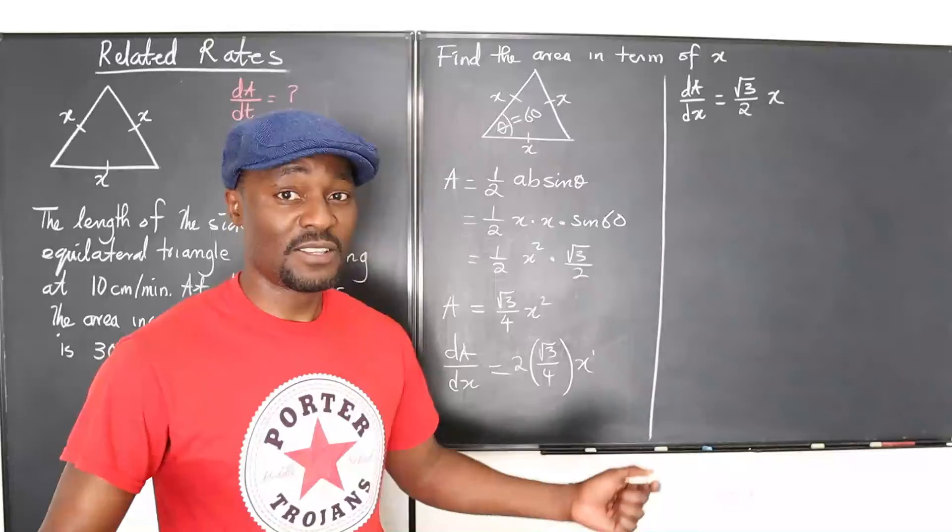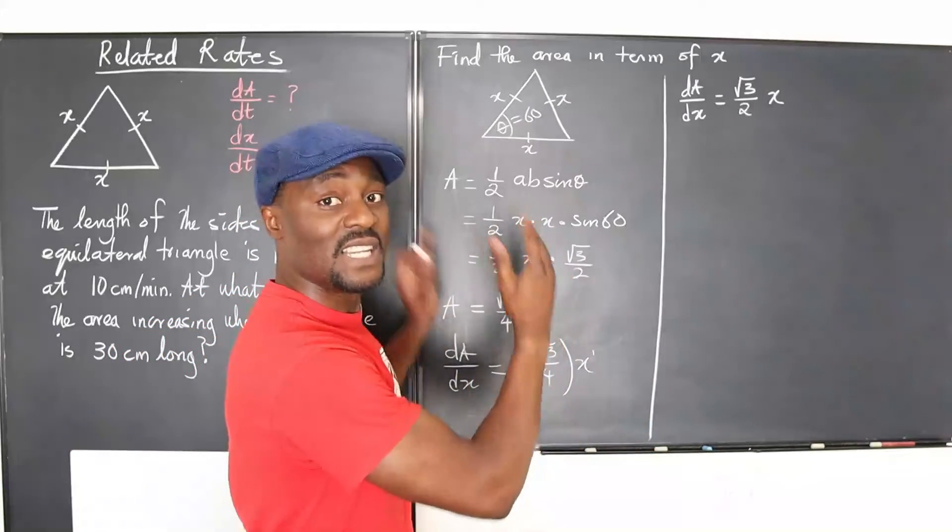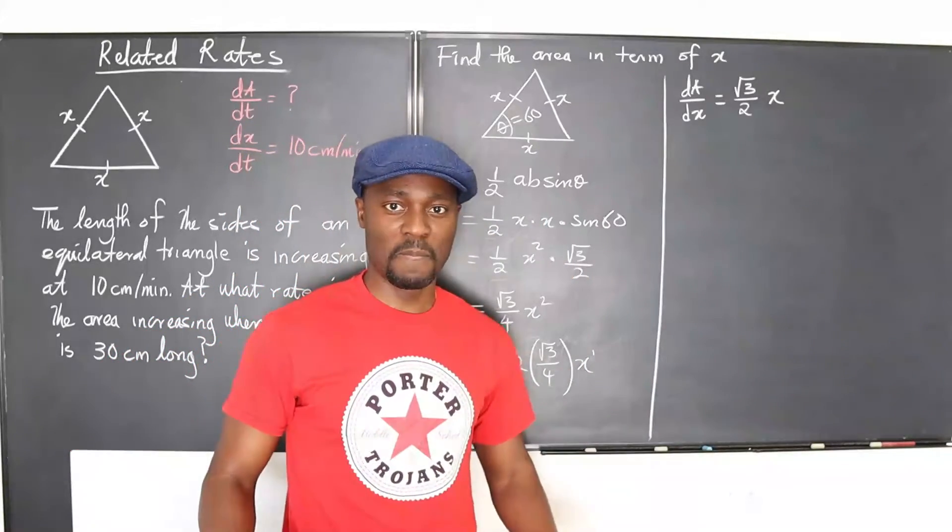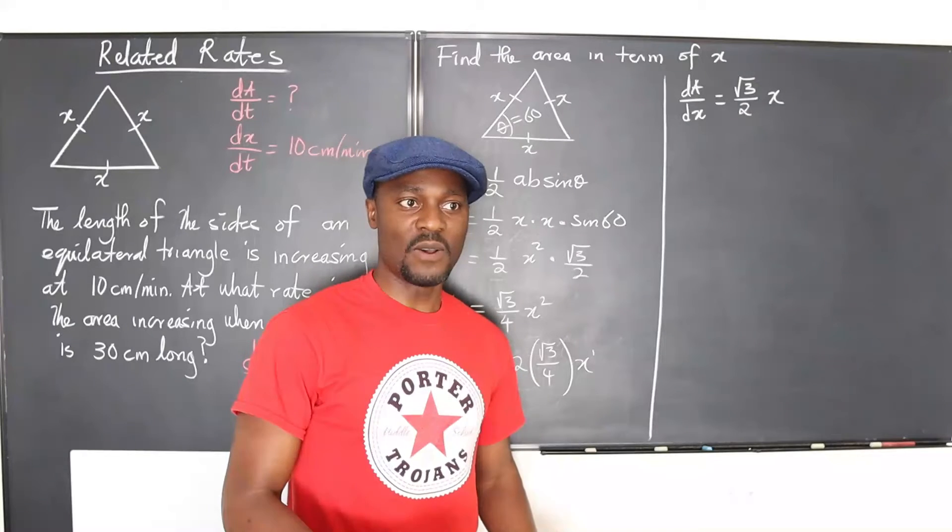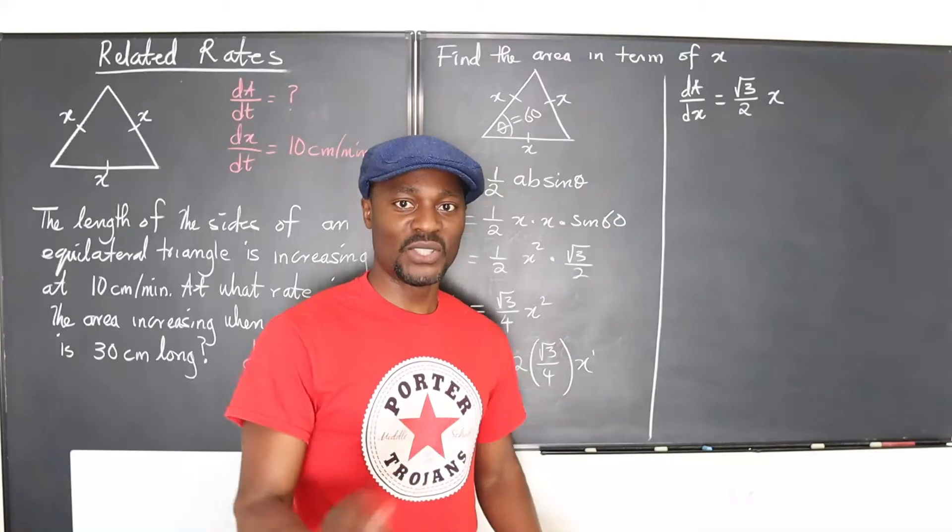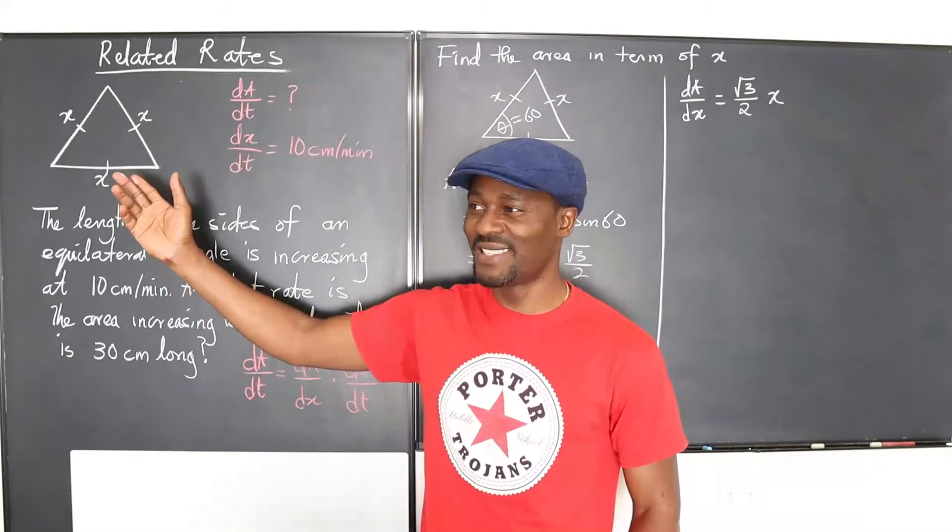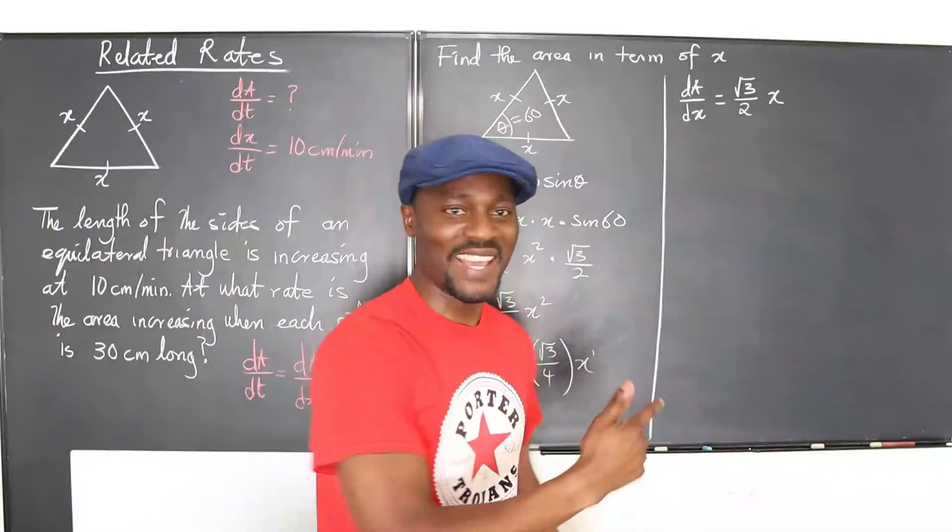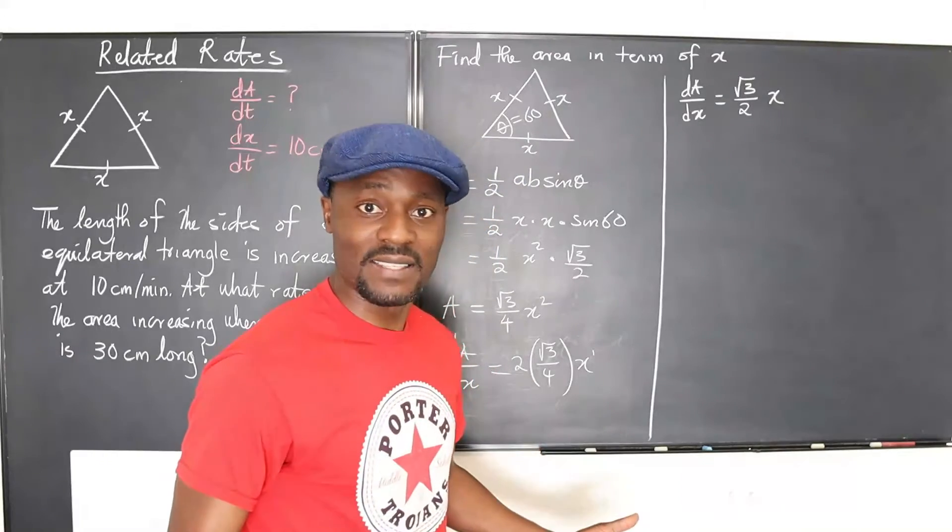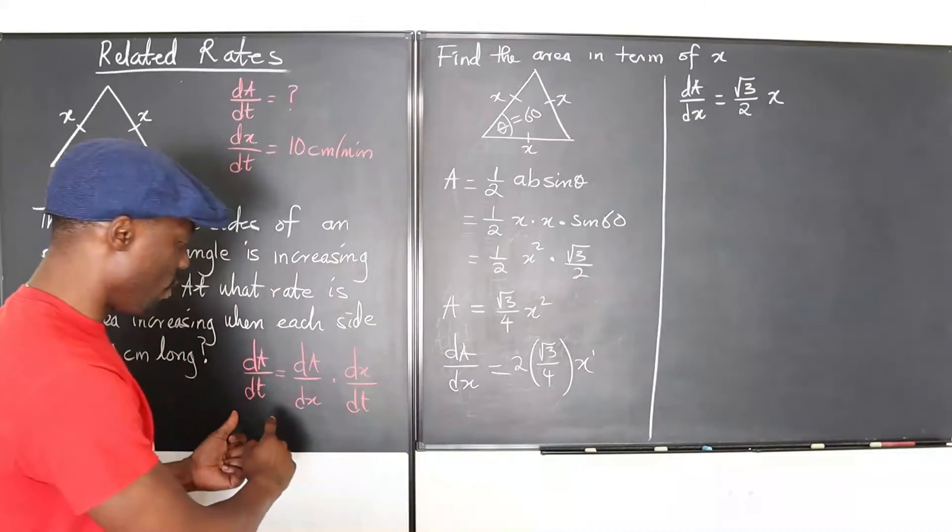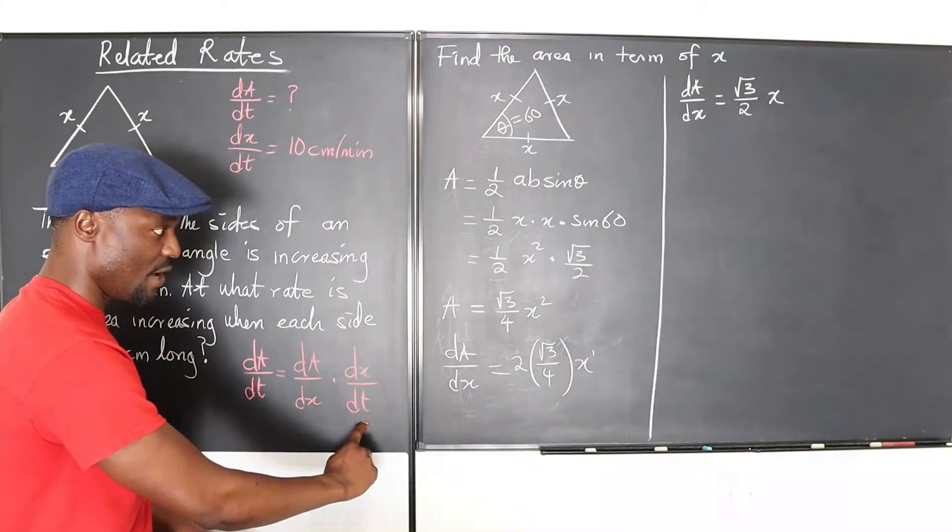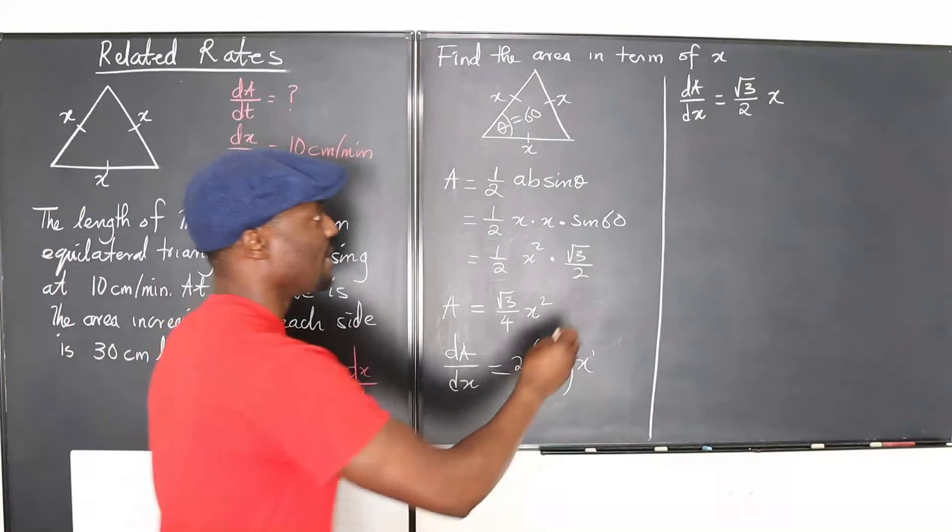That's the second most difficult part of this problem. The most difficult part is knowing that you need to find a relationship between the area and the side. That should be the easiest part. Now let's end this. So this is our formula. We already established this. We already know this. Let's do it.